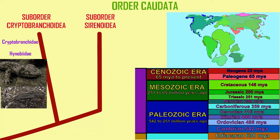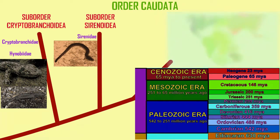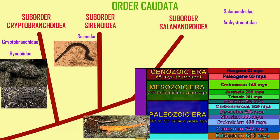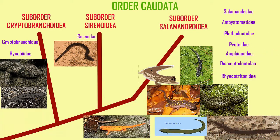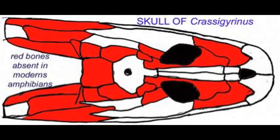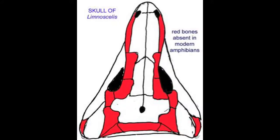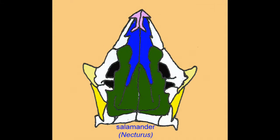Changes have occurred since the ancestral form, so much so that living salamanders lack many of the skull bones present in the first amphibians. Many salamanders have skulls which are substantially different from other salamanders, having evolved these differences since the various suborders and families have diverged.